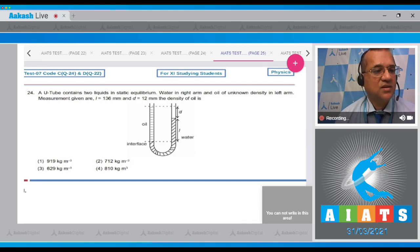Question number 24 is: a U tube contains two liquids in static equilibrium. Water in the right arm and oil of unknown density in the left arm. The measurements given are L is 136 mm, D is 12 mm and the density of the oil. You have to find. Options 1, 2, 3, 4. Now, dear students, you see from here, this is the interface and at the interface, the pressure from both sides should be equal.